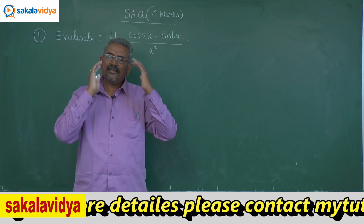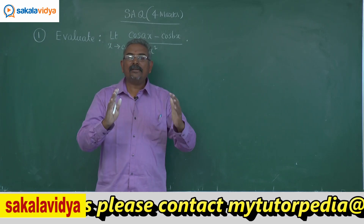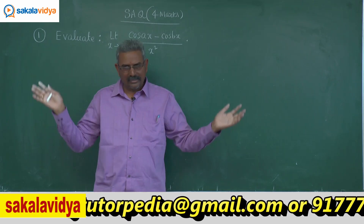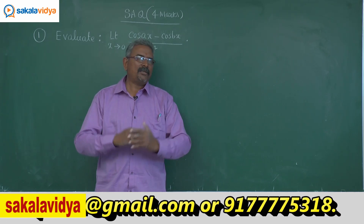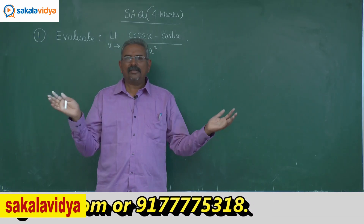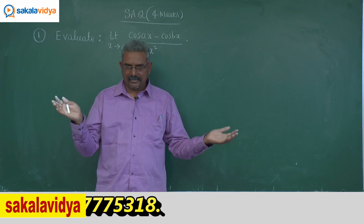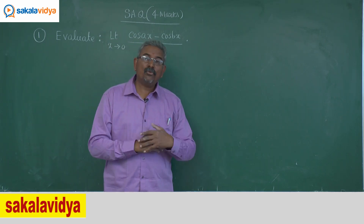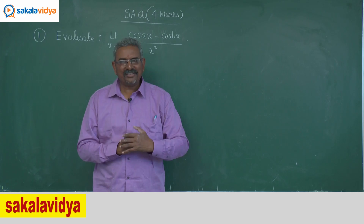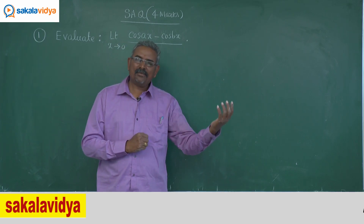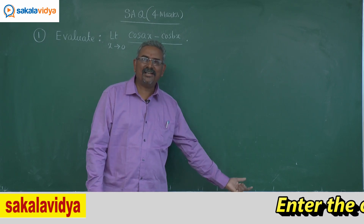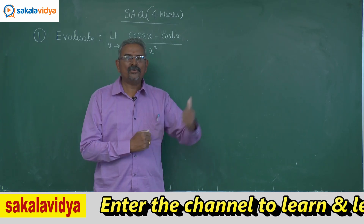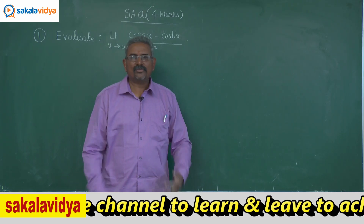This is one of the standard results to be remembered for competitive examinations like engineering entrance exams, JEE, JEE Advanced, SSC CGL, statistical officer examinations, PGT examinations, TGT examinations — whatever it may be. In limits, this model is very very important. Remember the shortcut once again: b squared minus a squared by 2. Now let us proceed through the steps to get b squared minus a squared by 2.